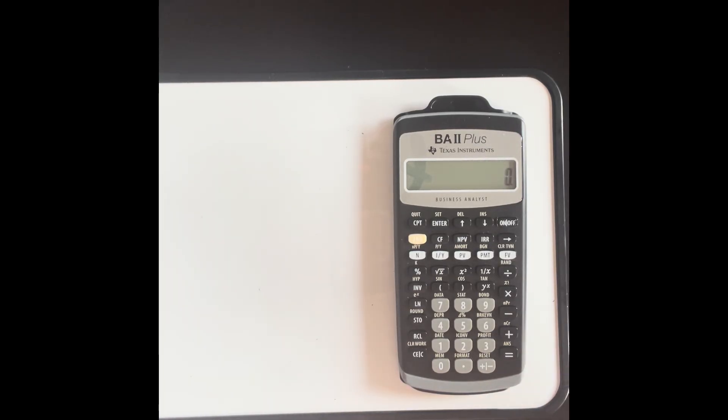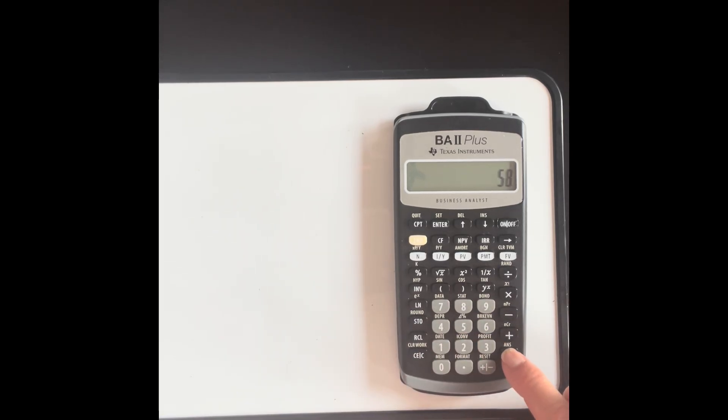But if you only want to clear an entry, so if I went one plus 63, and I wanted to change 63 to 58, I could just clear the entry, put my new entry in, and then go equals. So it doesn't clear the whole thing. And I didn't do it digit by digit, I just cleared the whole number. But if I want to clear the whole operation, I would press this twice.